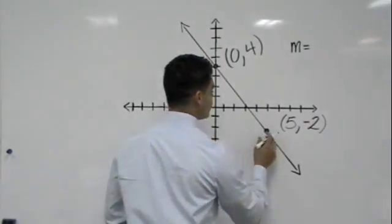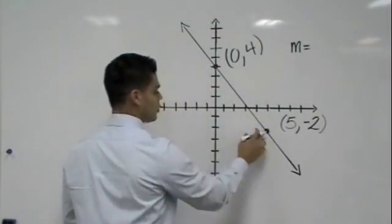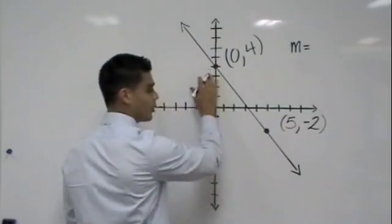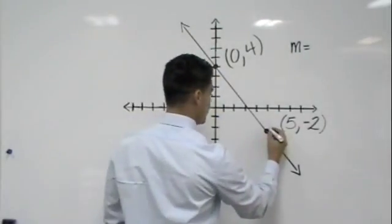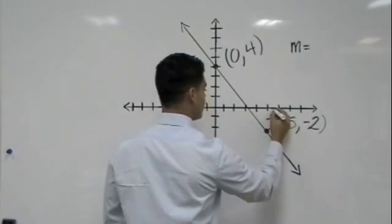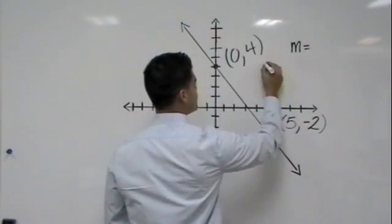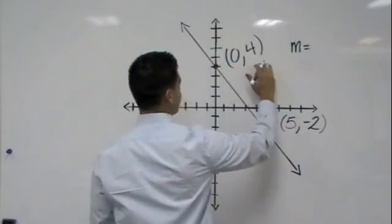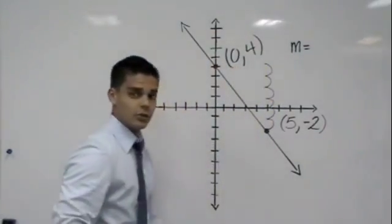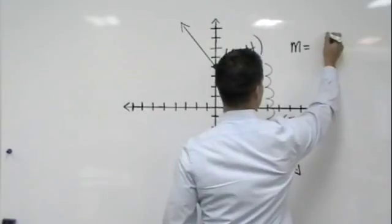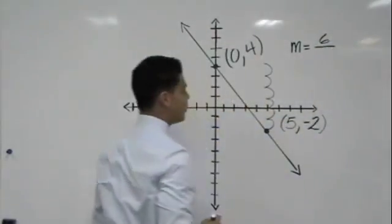So how do we find the slope? We always count the rise over the run. Let's go ahead and pick a point from here to here, we're going to find the slope. Always like to do the rise first: one, two, three, four, five, six. And I stop there because I'm at a horizontal line. So that's six, that's my rise. And what is my run?